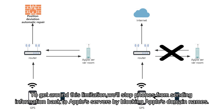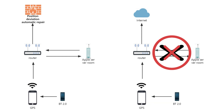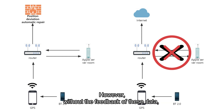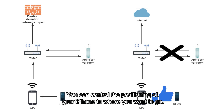To get around this limitation, we'll stop phones from sending information back to Apple's servers by blocking Apple's domain names. However, without the feedback of these data, the numerical control of the positioning information of the iPhone is taken over by our BT 2.0. You can control the positioning of your iPhone to wherever you want to go.